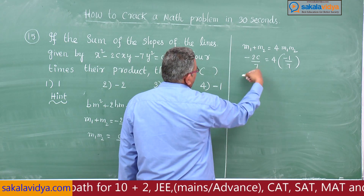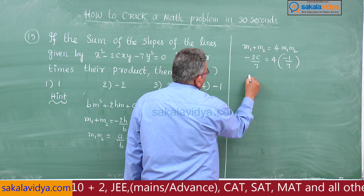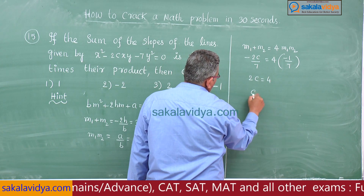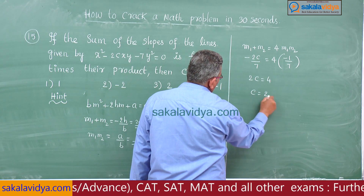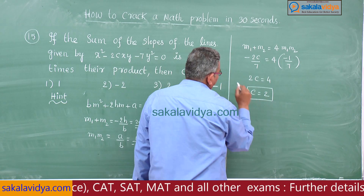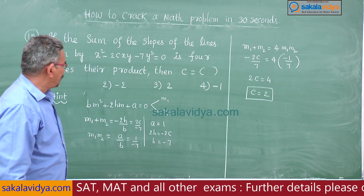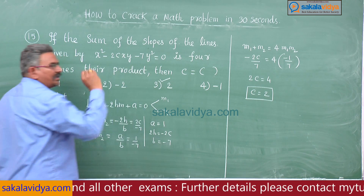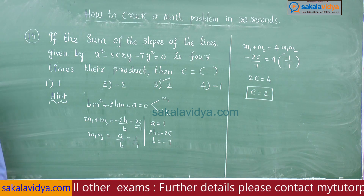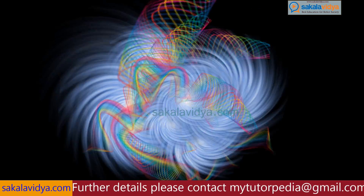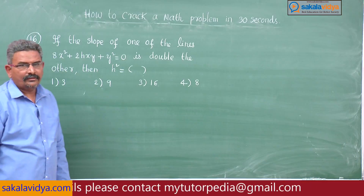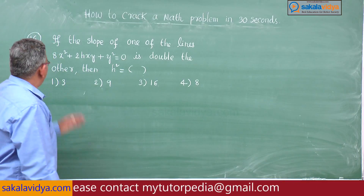The 7s cancel: -2c = 4·(-1) → -2c = -4 → c = 2. Very simple problem. The correct option is the third option: c = 2.